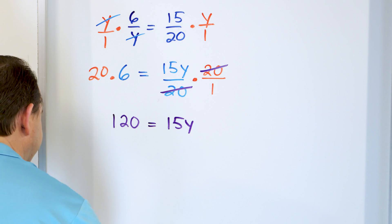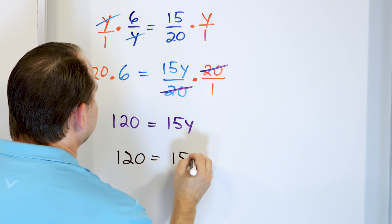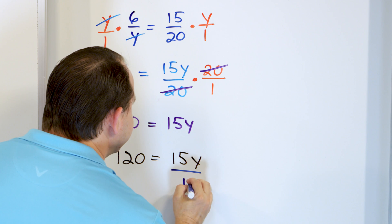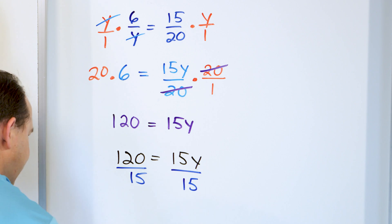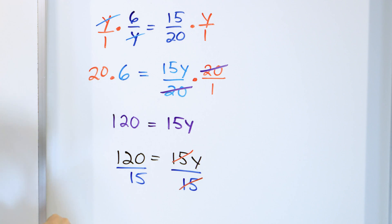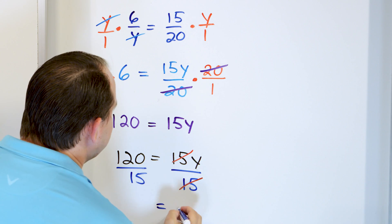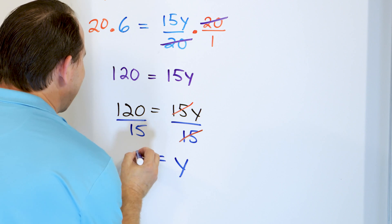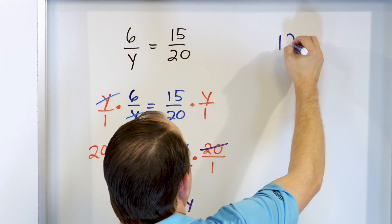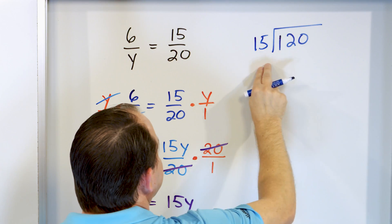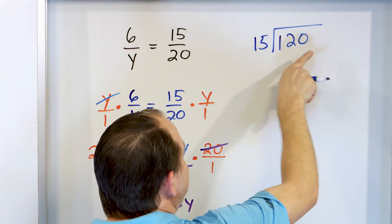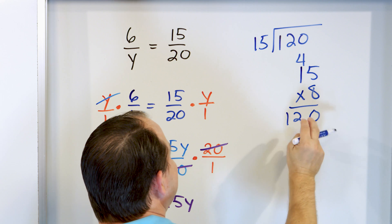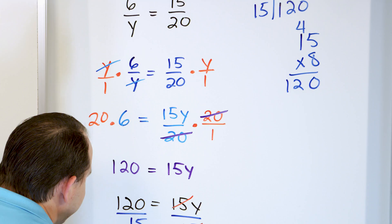Finally, we have 120 is equal to 15 times y. How do I get rid of the 15? The opposite of multiplication is division — divide both sides by 15. On the right, the 15 on top and 15 on bottom cancel, leaving just y. On the left, 120 divided by 15: 15 times 8 — 8 times 5 is 40, carry gives exactly 120 — so y equals 8. That is the final answer.